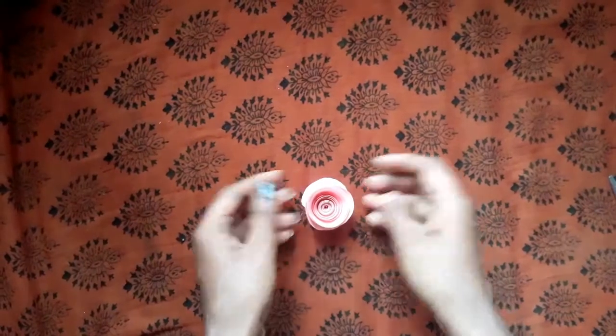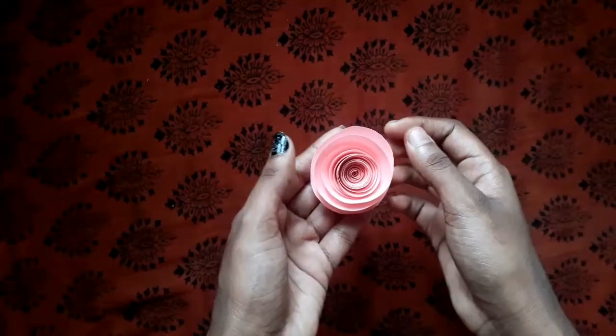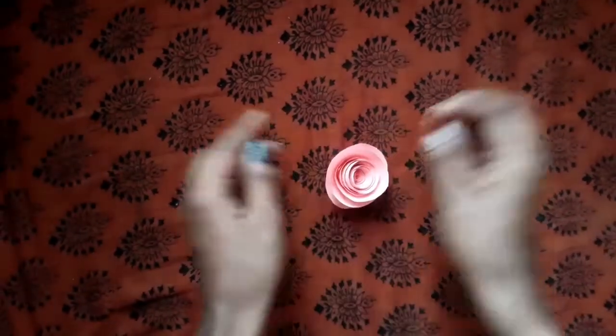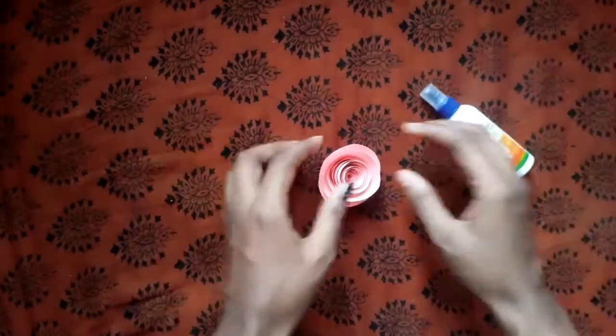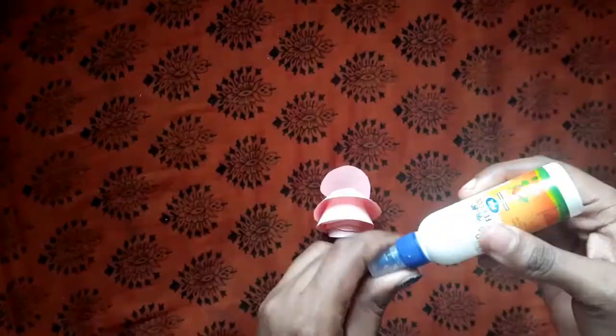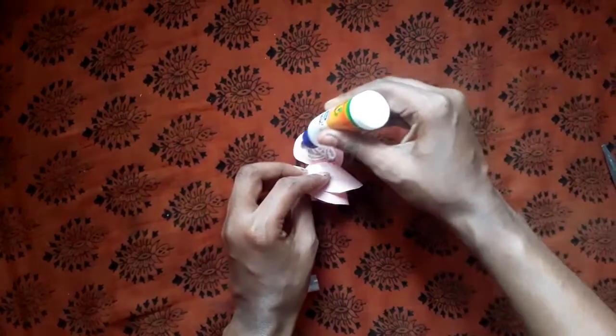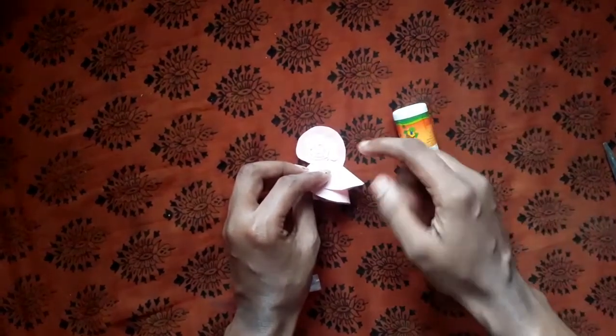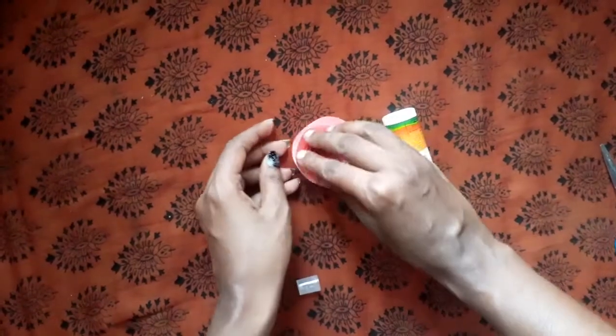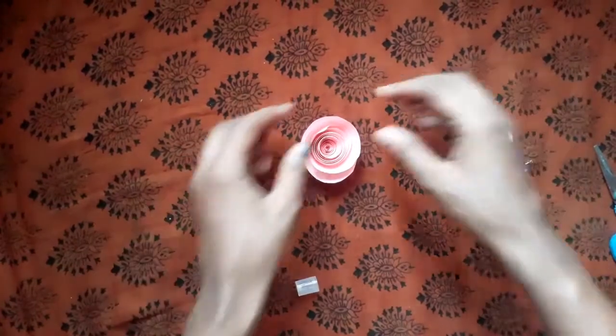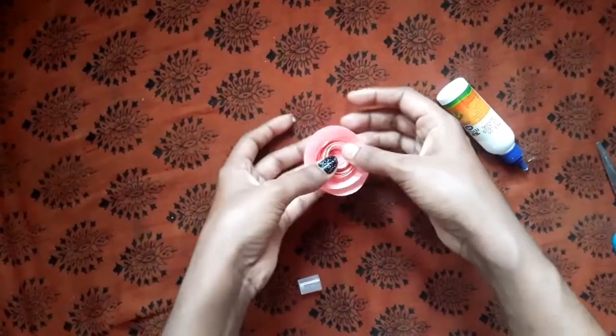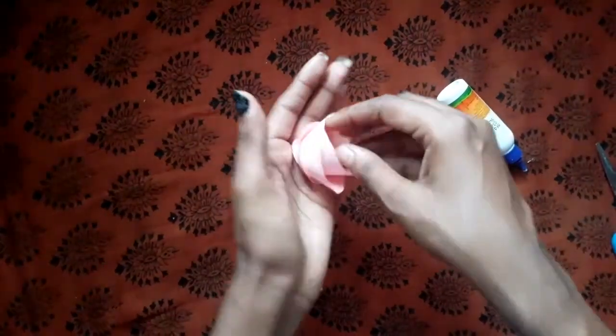Put glue in the middle of the round base. Then stick the rolled spiral onto it and press to secure. Add another round of paper on top and the rose is done.